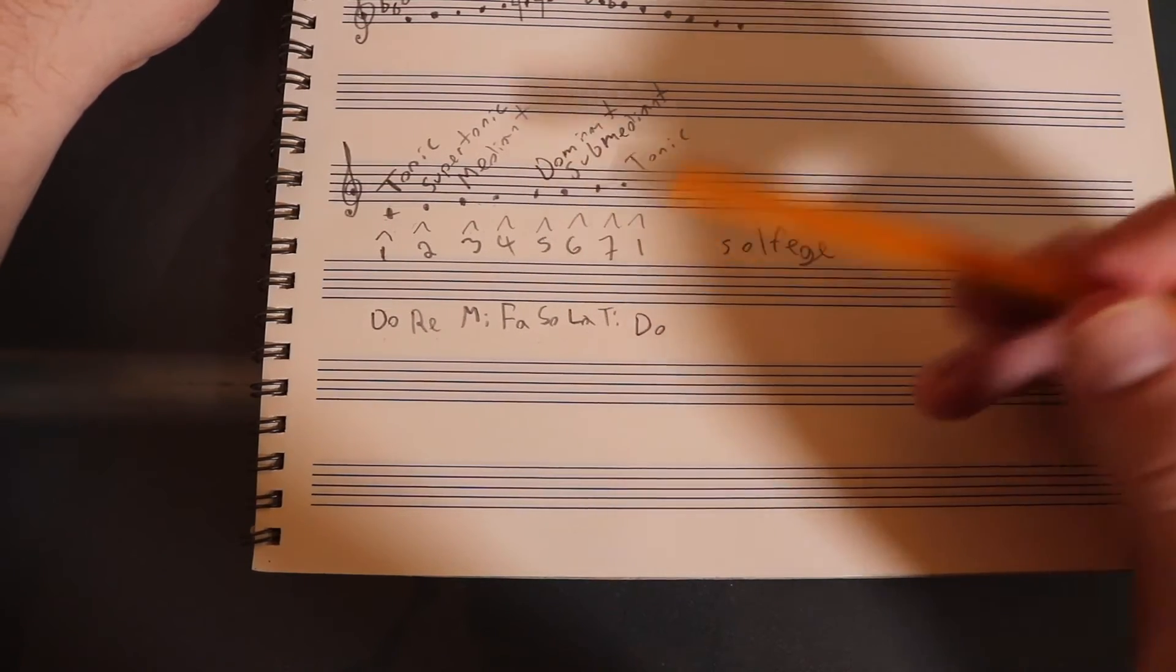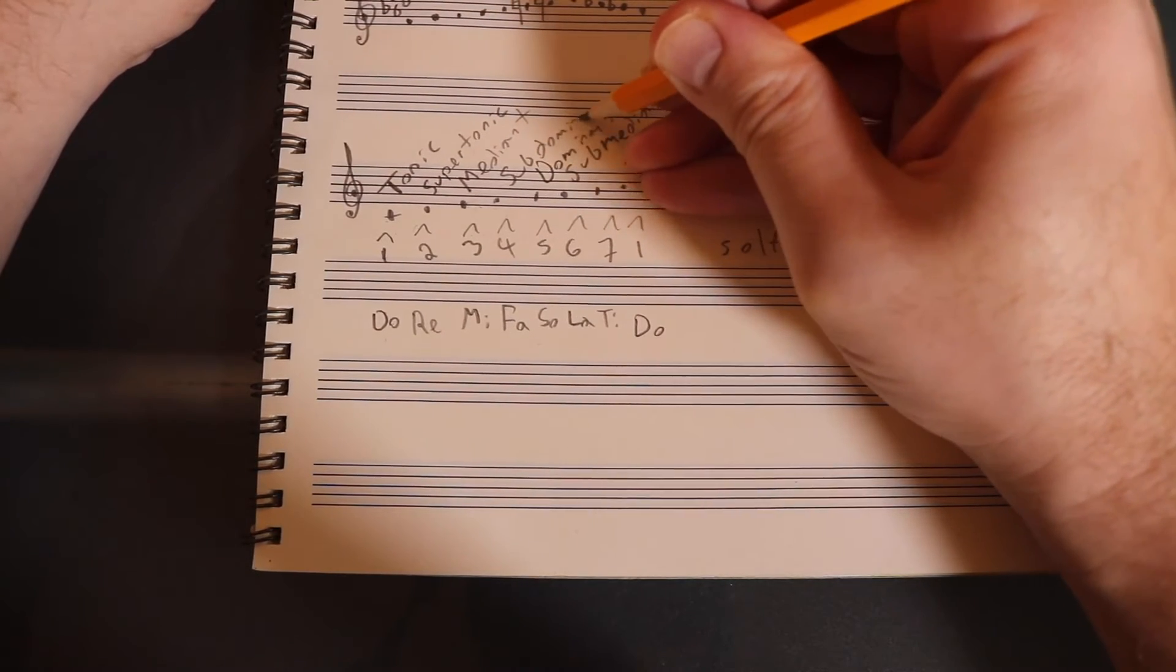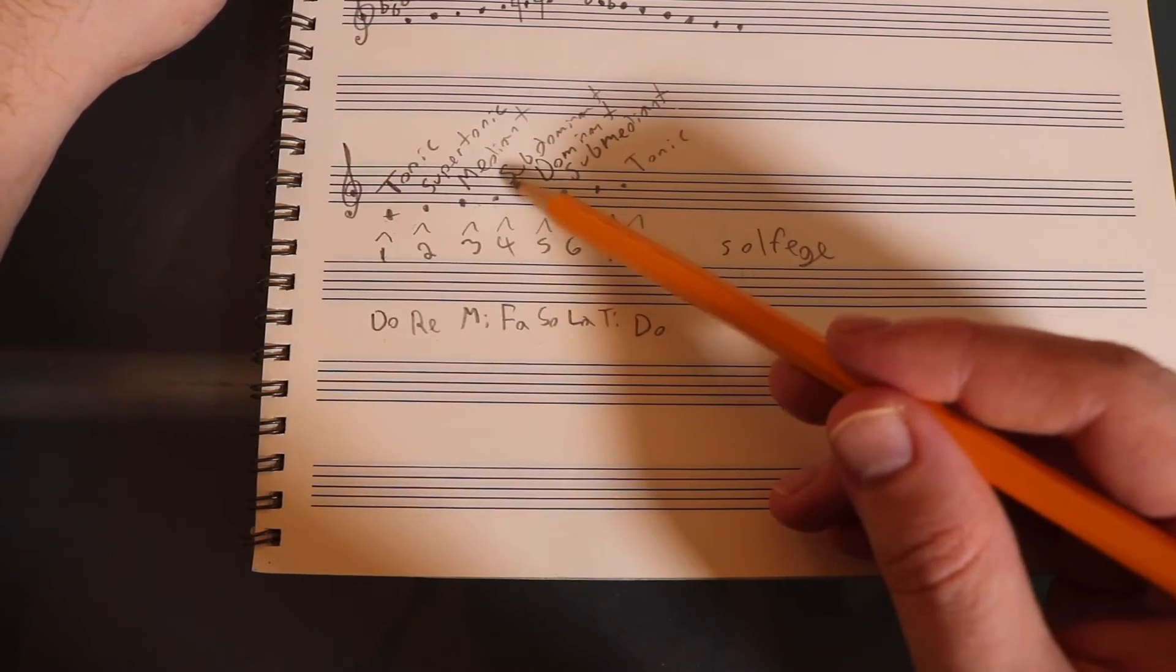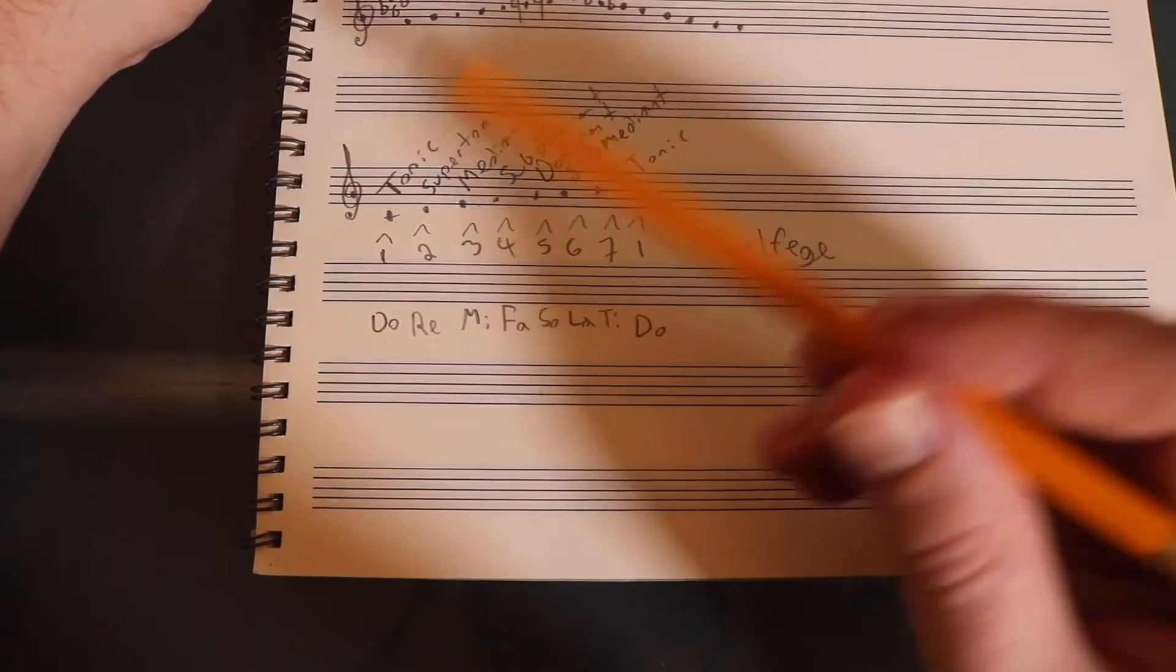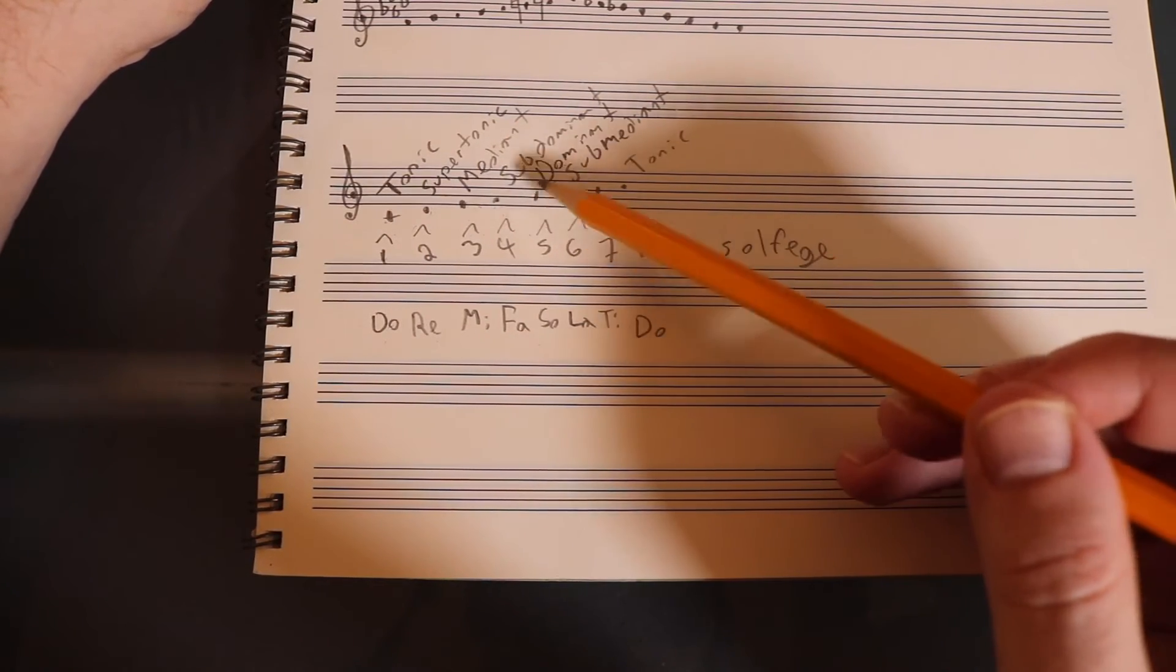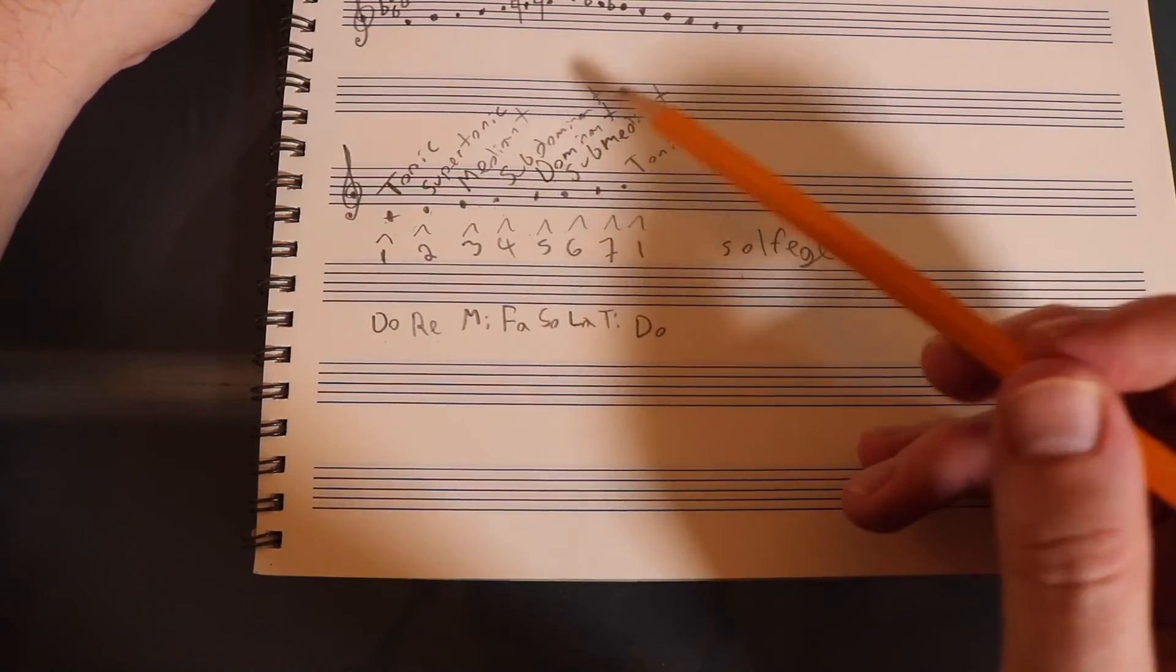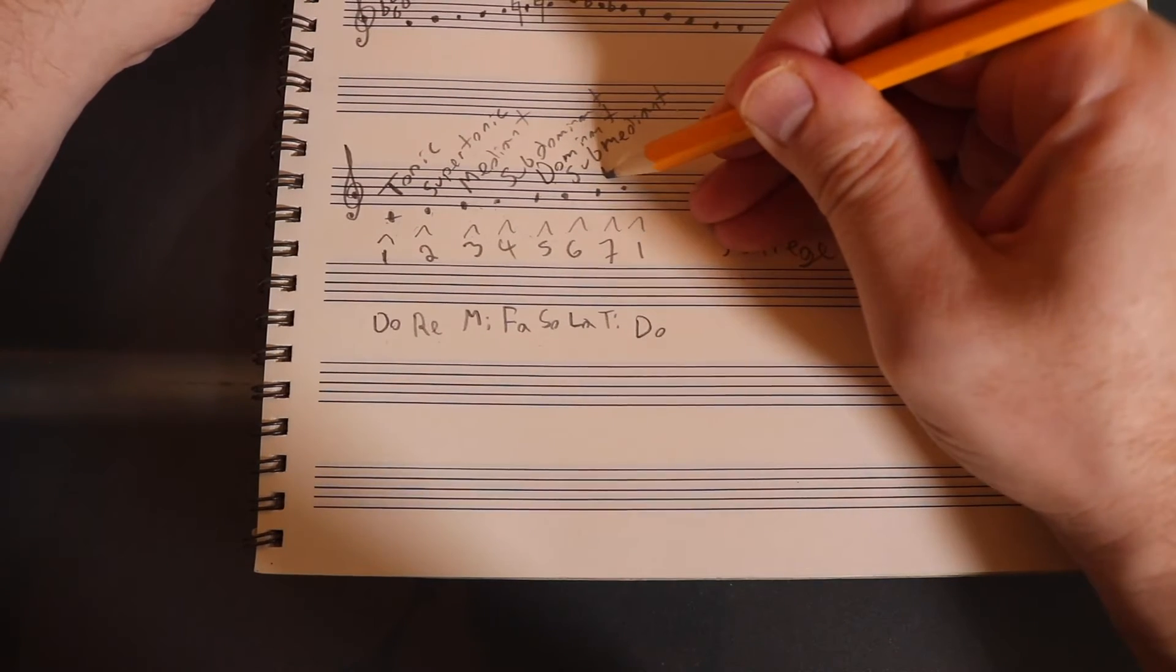Dominant means fifth scale degree. Subdominant, sometimes people think of this as below dominant. And whatever works for you. If that works, that seems to be an easy way to think about it. Subdominant comes below dominant. But here's another way to think about it. Dominant is the fifth scale degree: one, two, three, four, five. Subdominant, down five. One, two, three, four, five. Subdominant. And that might not be the easiest way to think about it. Whatever it is for you, it's fine. Last one up here is called the leading tone.